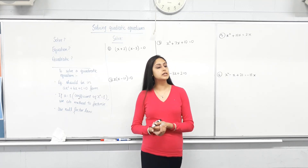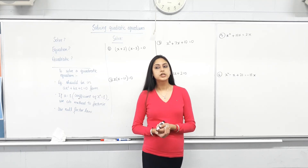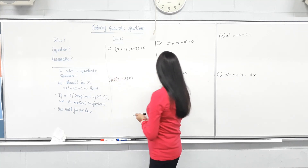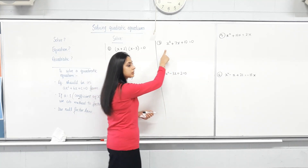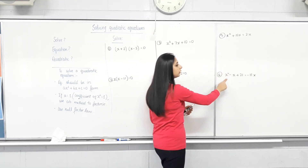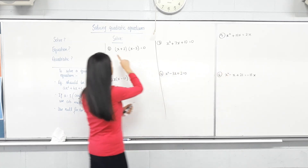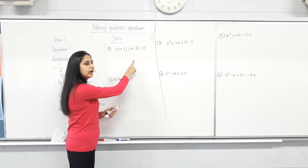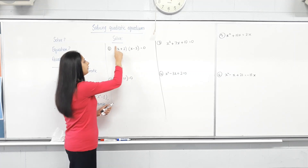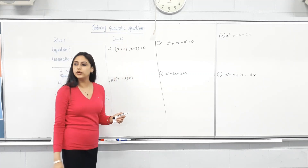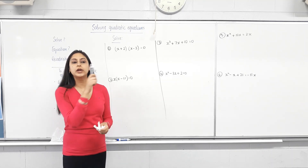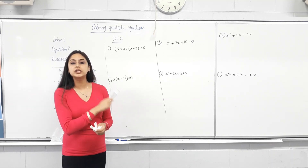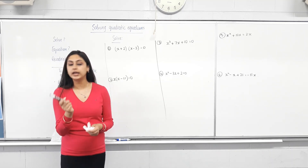With linear equations, the highest power of x is 1, and the graph was a straight line. What's the highest power of x here? If I expand it, x times x will give you x squared. Are you happy that they're all quadratics? So we are solving quadratic equations.